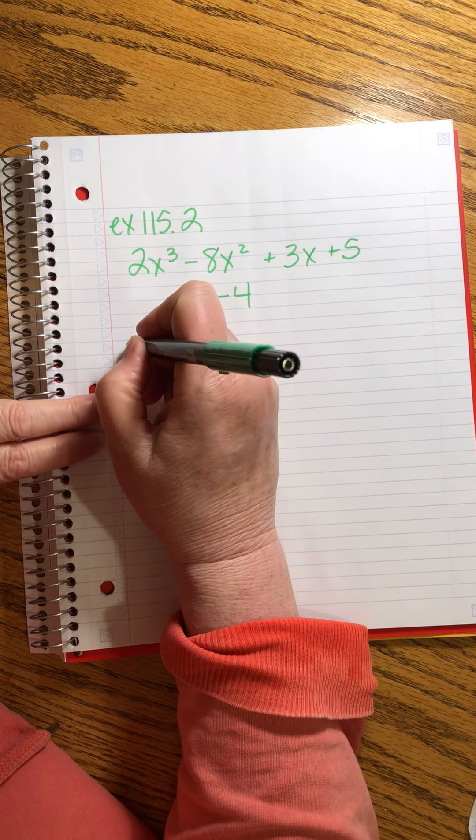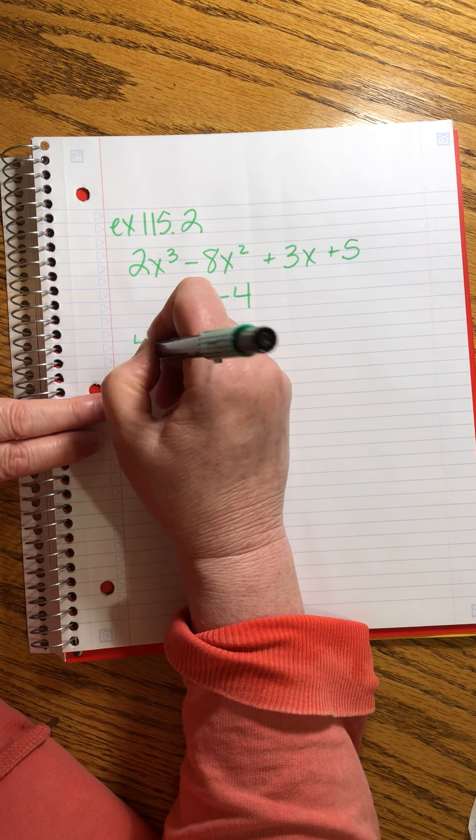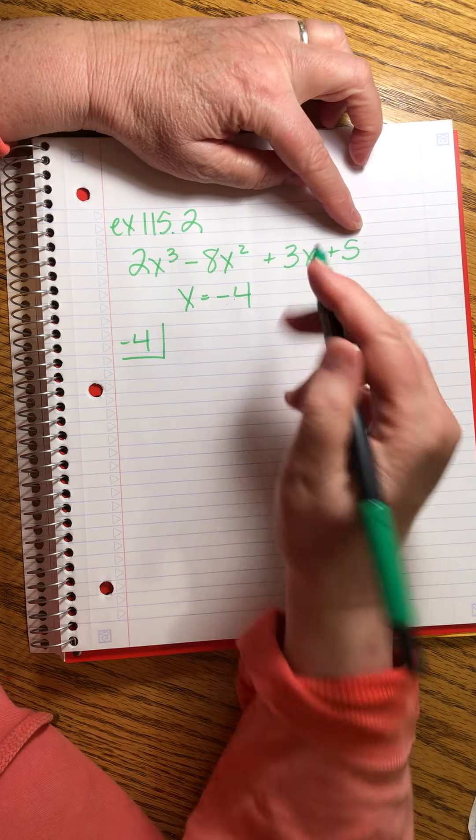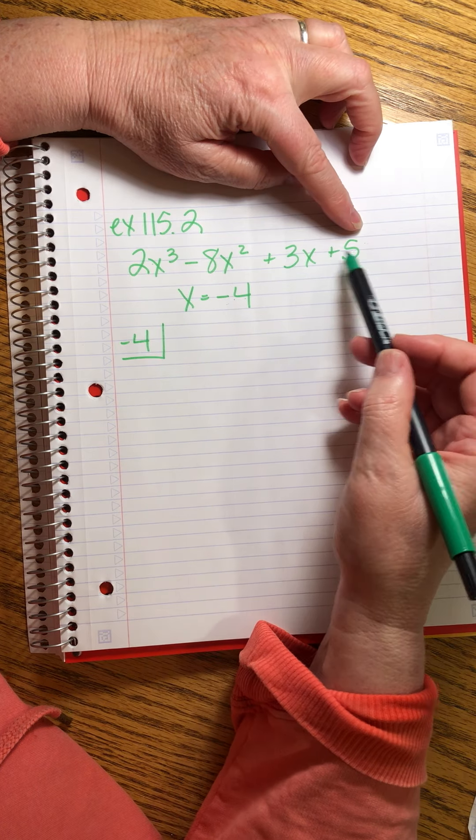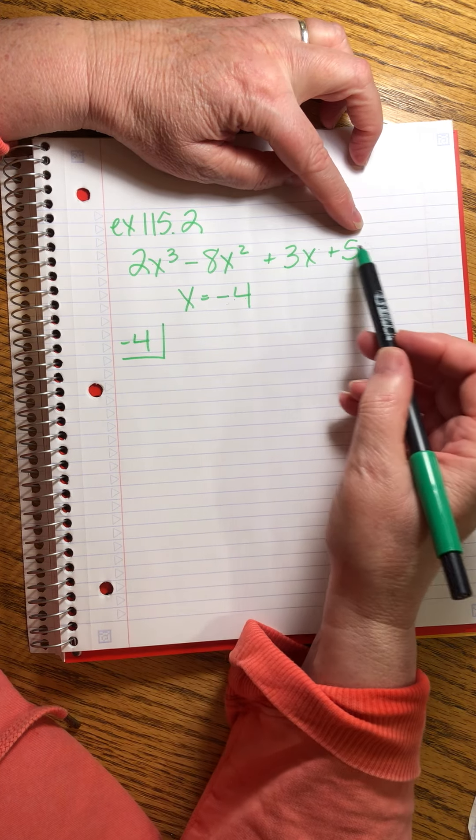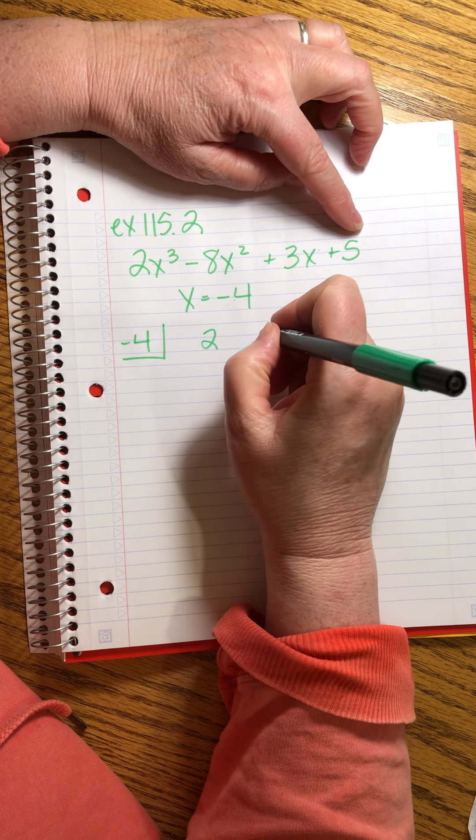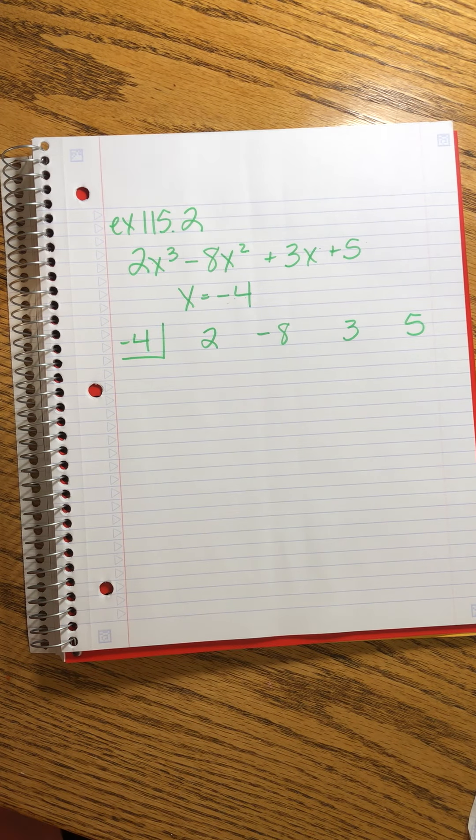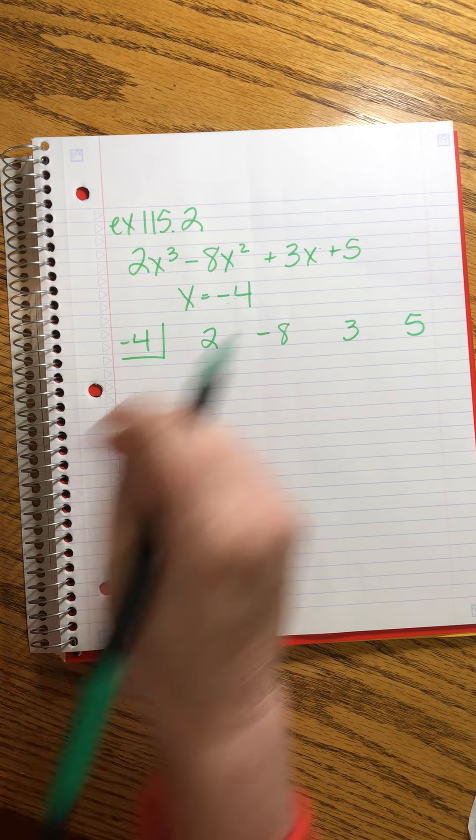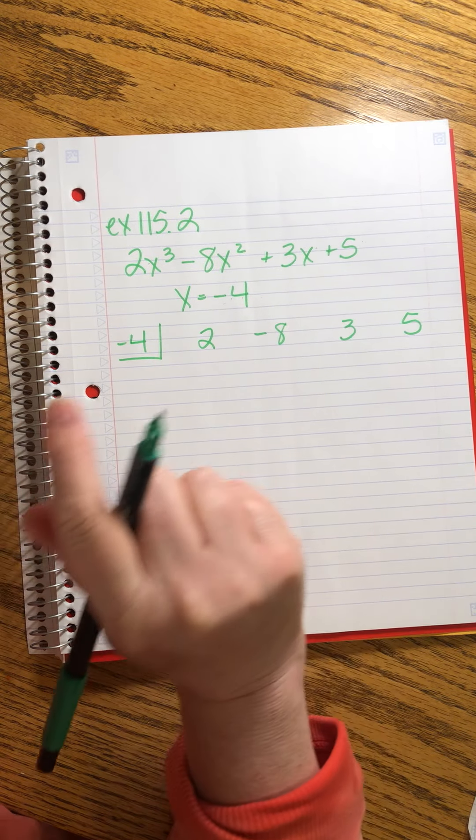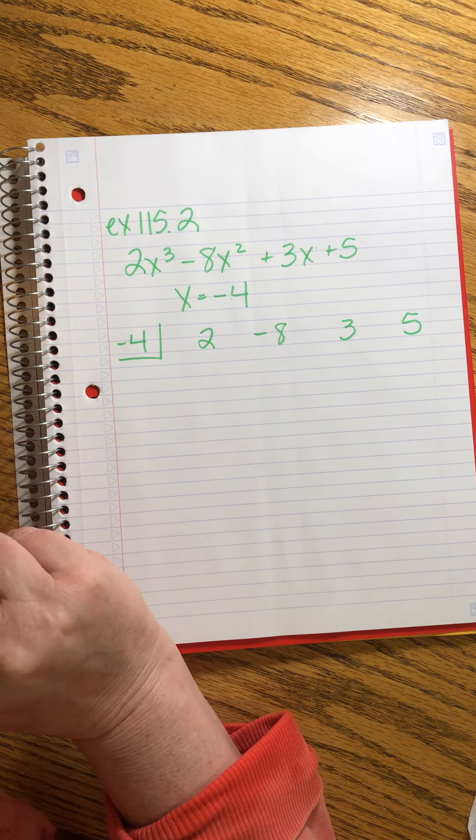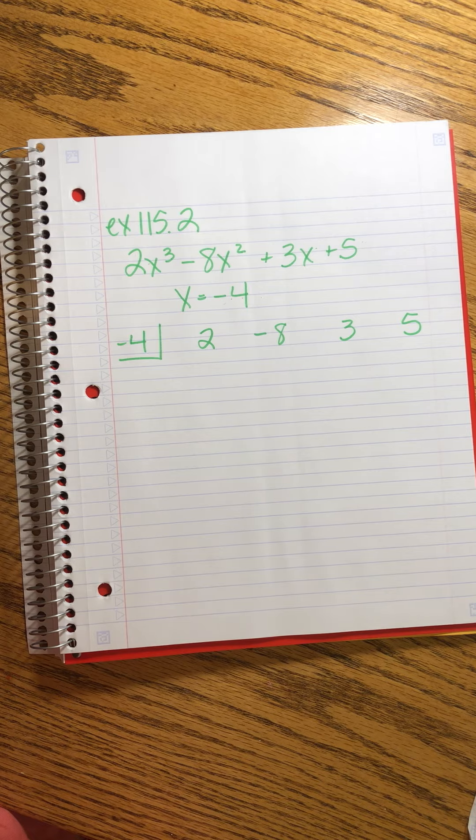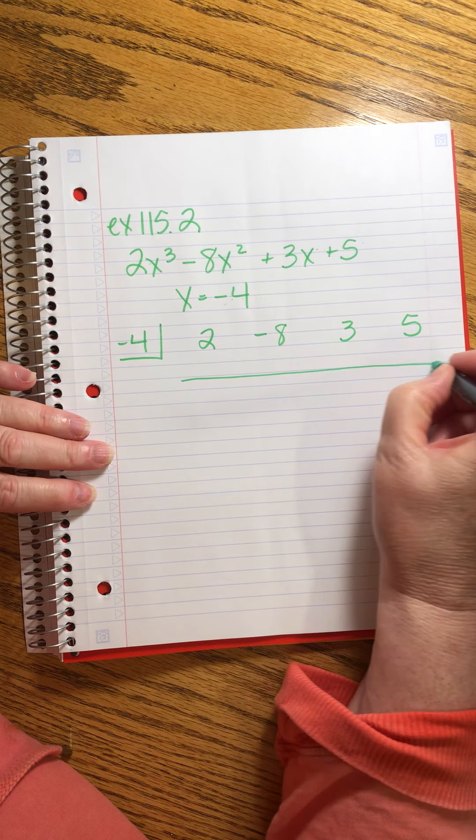And we know that the remainder will give us the value of the original function when we plug that in. That's the remainder theorem at work. So it's going to be minus 4 in the box, and then we have to copy our coefficients and make sure that we have every place value. This one looks like it doesn't skip. 3, 2, 1, and then none. So we're okay. 2, minus 8, 3, and 5. So this is where our synthetic division is really paying off because it gives us an easy way to evaluate polynomials by relying on that remainder theorem, knowing that whatever we get at the end of this, that's the value of that function. It's weird, but it's true.